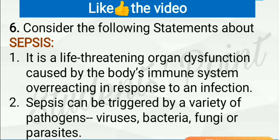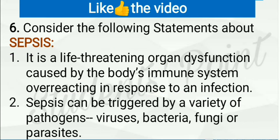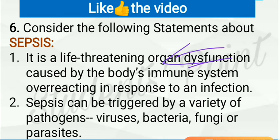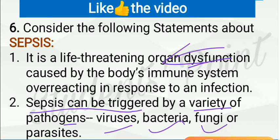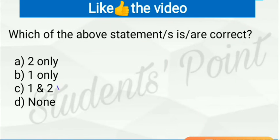Consider the following statements about sepsis. It is a life-threatening organ dysfunction caused by the body's immune system overreacting in response to an infection — this statement is correct. Normally our immune system protects us from infections, but sometimes it becomes dangerous when it overreacts. Sepsis can be triggered by a variety of pathogens which may include viruses, bacteria, fungi, or parasites — this is also correct. So C is the right answer.